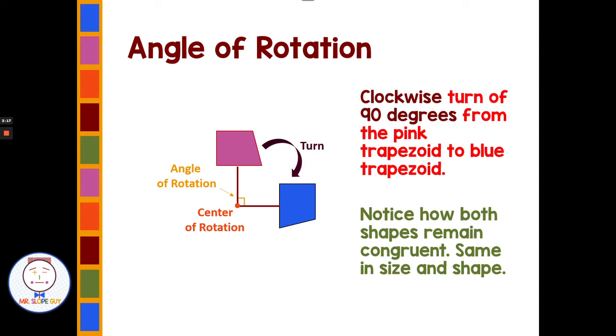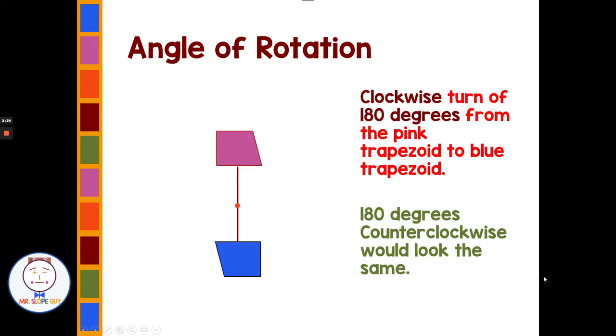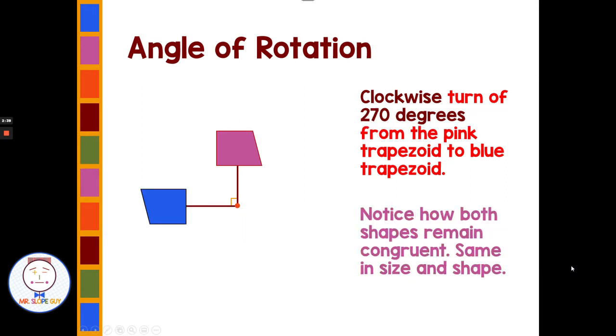With rotations, reflections, and translations, our original and our image are still congruent. They are still the same size and shape. This one we're showing a 90-degree turn clockwise. We could turn it one more time, it would be 180 degrees, and a third time would be 270 degrees.